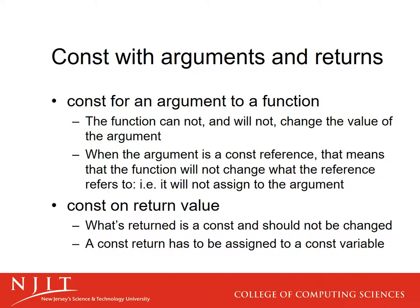If your function returns something and you don't want people to be able to change it, declare the return type to be const. This is particularly useful if a function returns a reference to something — you have some object you're managing, a getter that lets people have a reference, but you don't want them to make changes. You just want them to look at it. Declare it a const return value, and whatever comes back is a reference that can't be changed.